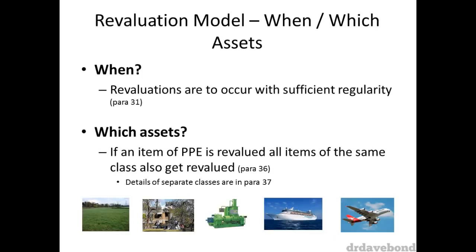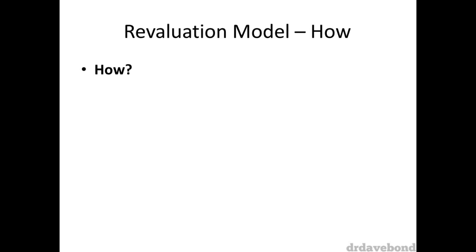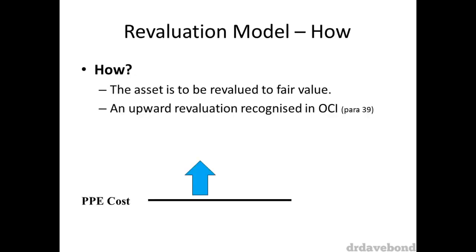Paragraph 37 provides details of what the separate asset classes are. Once a company makes a decision to revalue an asset, the asset is to be revalued to its fair value. Fair value is usually determined by a market-based appraisal of the asset — see AASB 13 Fair Value for more information. If the asset's fair value is greater than its current carrying value, it is an upwards revaluation. According to paragraph 39, this increment — the difference between fair value and carrying value — is recognised in other comprehensive income, specifically as a revaluation surplus.